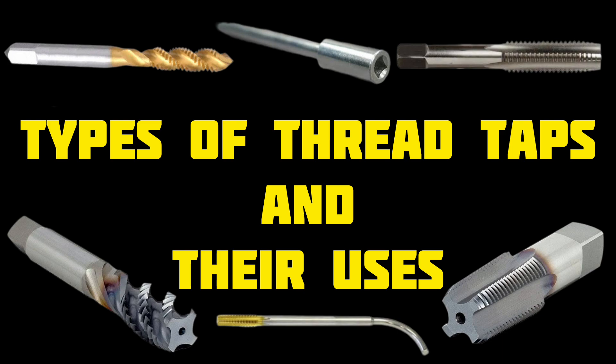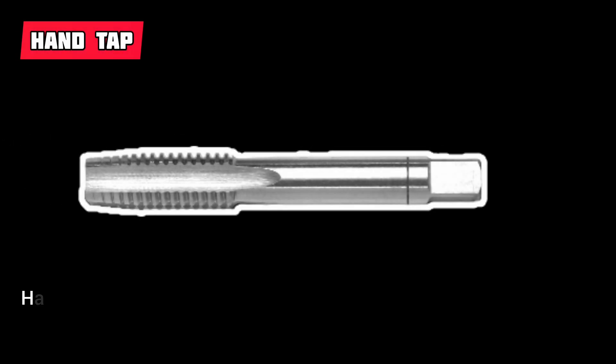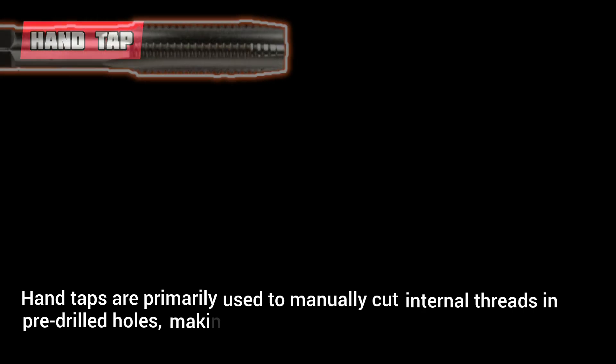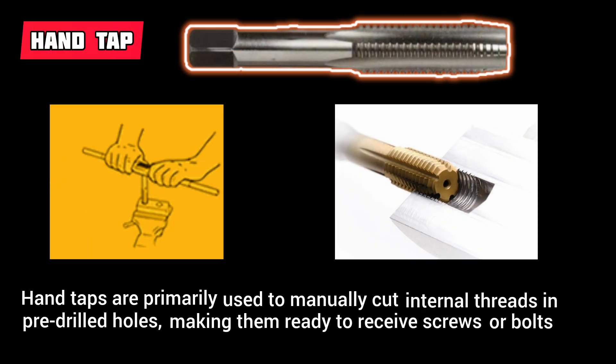Types of Thread Taps and Their Uses. Hand taps are primarily used to manually cut internal threads in pre-drilled holes, making them ready to receive screws or bolts.